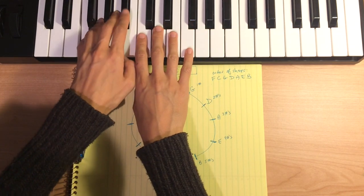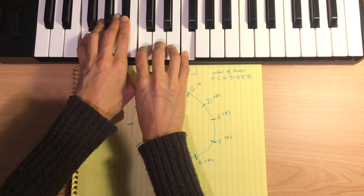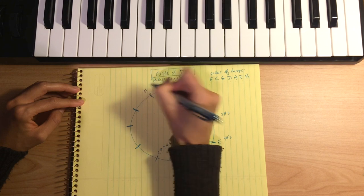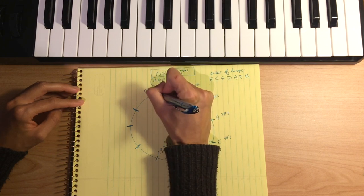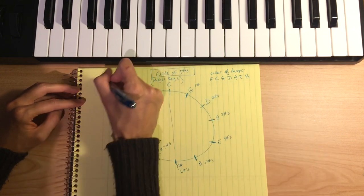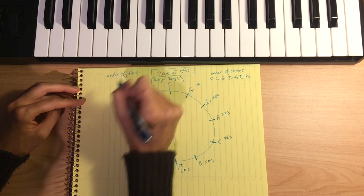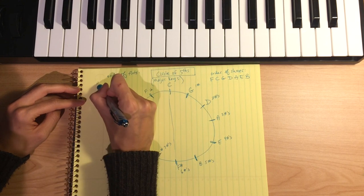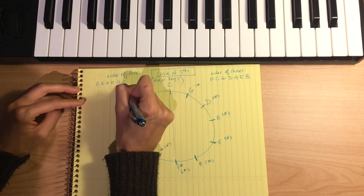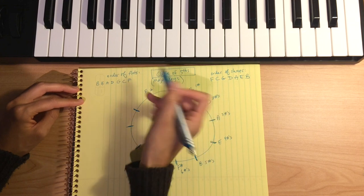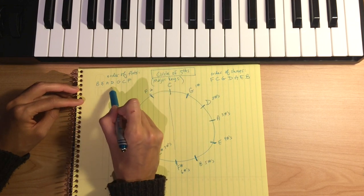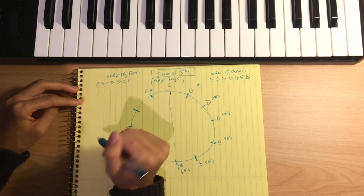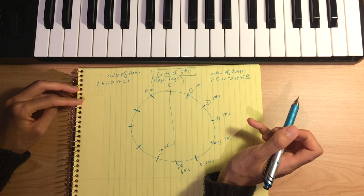F major starts and ends on F and has one flat: B flat. The order of flats is the opposite of the order of sharps: B, E, A, D, G, C, F. You can remember it as 'BEAD, go catch fish,' or just remember it's the reverse of the order of sharps.